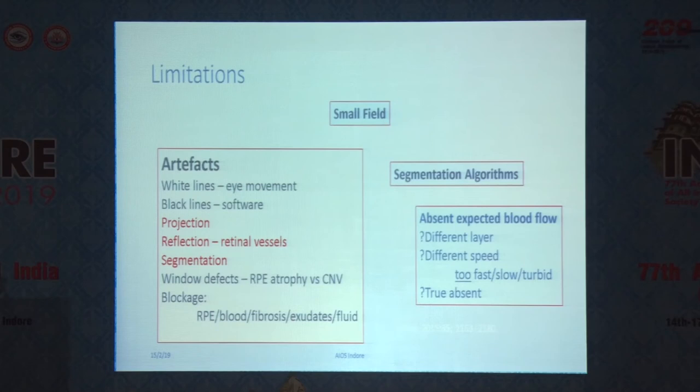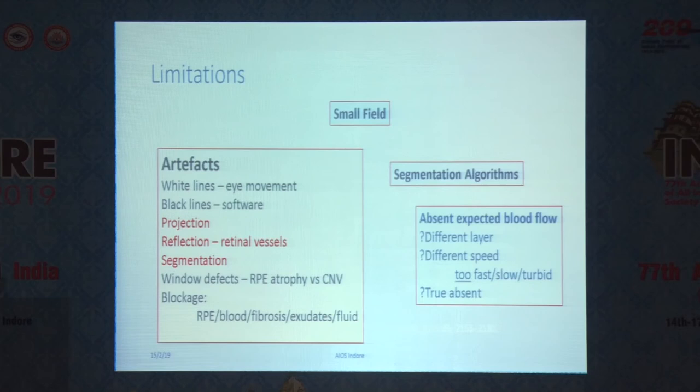There are quite a few limitations of OCT angiography, especially with patients with poor cooperation. A patient needs to keep the eye still, otherwise you get lots of artifacts. There are also projection artifacts seen at times. Furthermore, when talking about diabetic retinopathy, it's quite useful but only picks up blood flow that is fast enough for the program to identify. So some microaneurysms in diabetic retinopathy may not be picked up by OCT angiography.